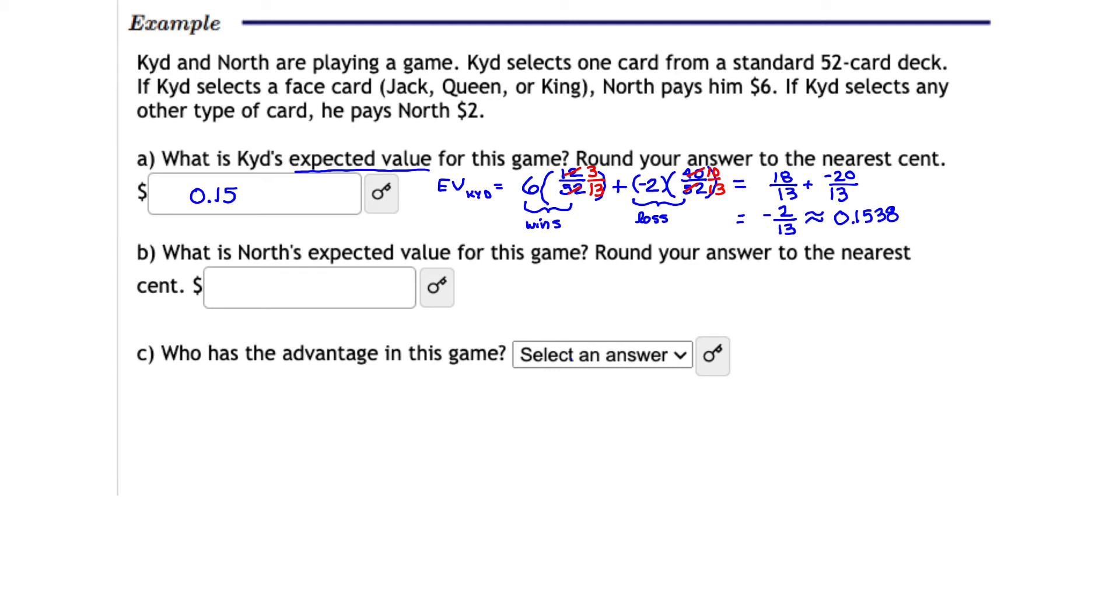Let's now take a look at North's expected value for the game. So the expected value from North's perspective. And let's think about this. Well, whenever Kid wins, North actually loses. And whenever Kid loses, North actually wins, right? So whenever Kid selects a face card, North has to pay him. So from North's perspective, he loses every time a face card comes up. The probability of the face cards we already found from the first part was 3 out of 13. And North, he wins or gains $2 every time a non-face card is selected. So we would take 2 times 10 out of 13. That means that North's expected value is negative 18 over 13 plus 20 over 13. And that's positive 2 over 13.